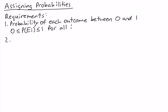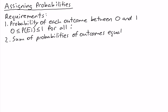The second requirement is that the sum of the probabilities of all outcomes equals 1. We write this as: the probability of outcome 1 plus the probability of outcome 2, and so on up to the last outcome E_n, equals 1, where there are n outcomes. Those are the two requirements: each probability must be between 0 and 1, and their sum must equal 1.